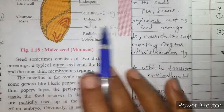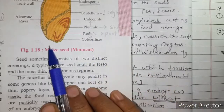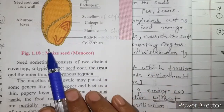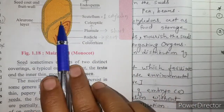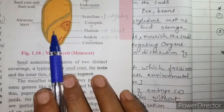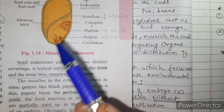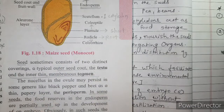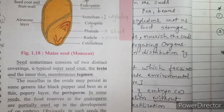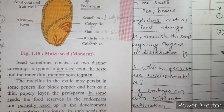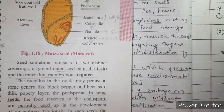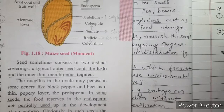So all this is about the development of the seed and development of fruit. The remaining portion of this chapter we will see in the next period, students.